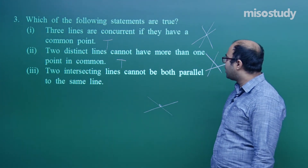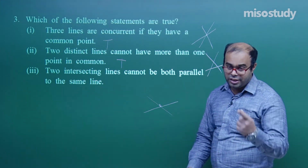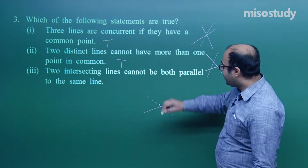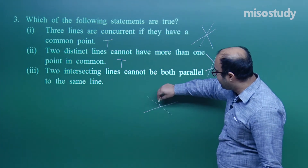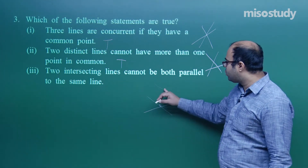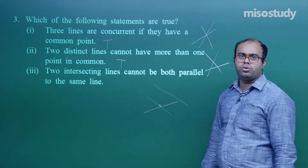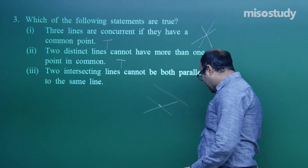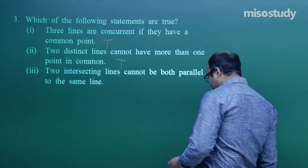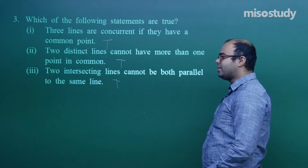Third statement: two intersecting lines cannot both be parallel to the same line. This is also correct. We studied this as the last postulate — if two lines are intersecting, they cannot both be parallel to the same line. If one is parallel to a given line, the other can never be parallel to it. So all three statements in this question are true.